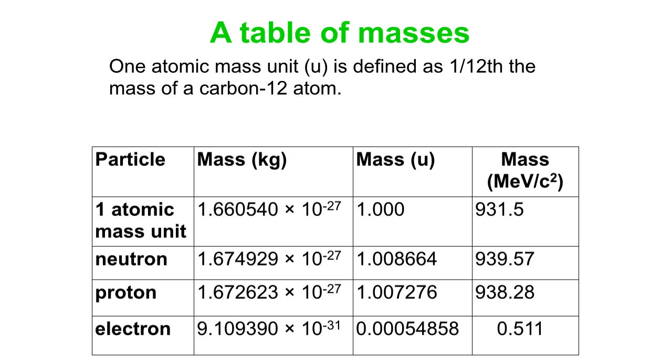Here's a table. You can see what one atomic mass unit is in kilograms. It's 931.5 mega electron volts per C squared, the equivalent energy unit expressed as a mass. Neutrons are slightly more massive than protons, and electrons are something like 1,800 times less massive.